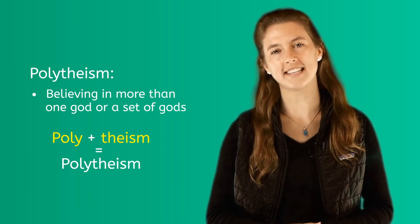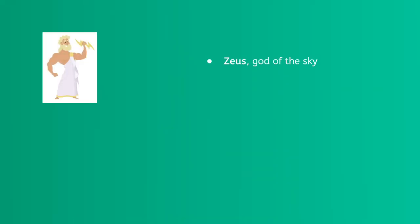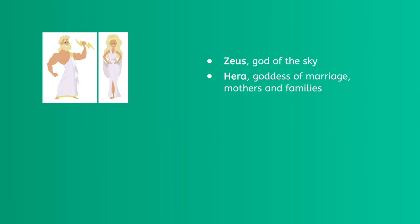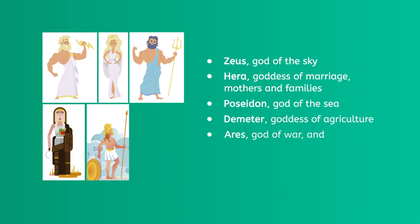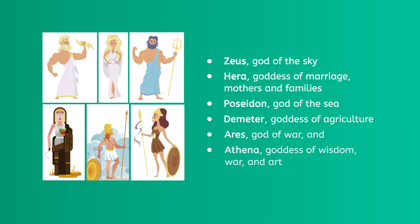Some of the most famous of these included Zeus, god of the sky, Hera, goddess of marriage, mothers, and families, Poseidon, god of the sea, Demeter, goddess of agriculture, Ares, god of war, and Athena, goddess of wisdom, war, and art.